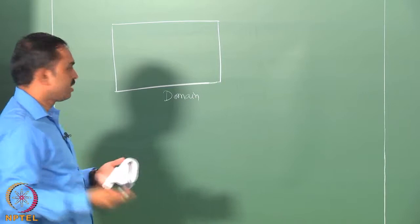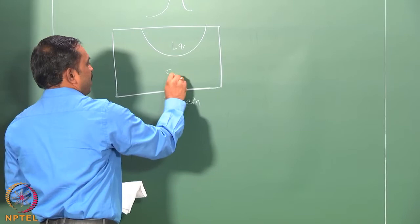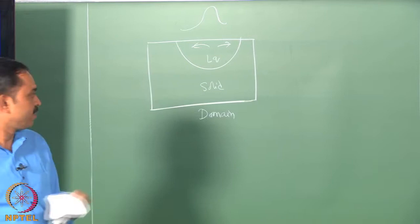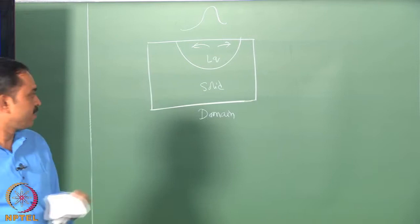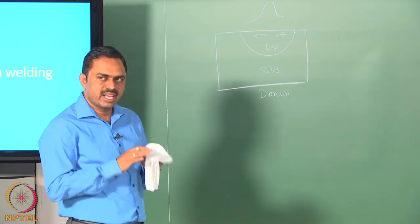We start by looking at what we call the domain, which is the sample work piece. Upon the heat source applied on top of the domain, you melt some region, and it is in this region that we are looking at the fluid flow phenomenon. People may draw arrows to indicate how the fluid flow is happening inside the pool, and which way this convection changes the melt pool shape will be discussed as we proceed.